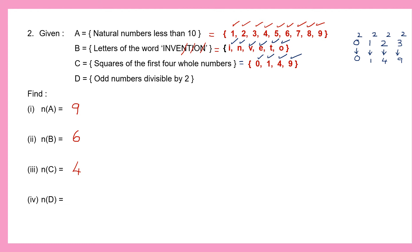Set D: odd numbers divisible by 2. Do we have odd numbers divisible by 2? No, we don't. So there is no element inside the set, and the cardinal number of set D is 0.